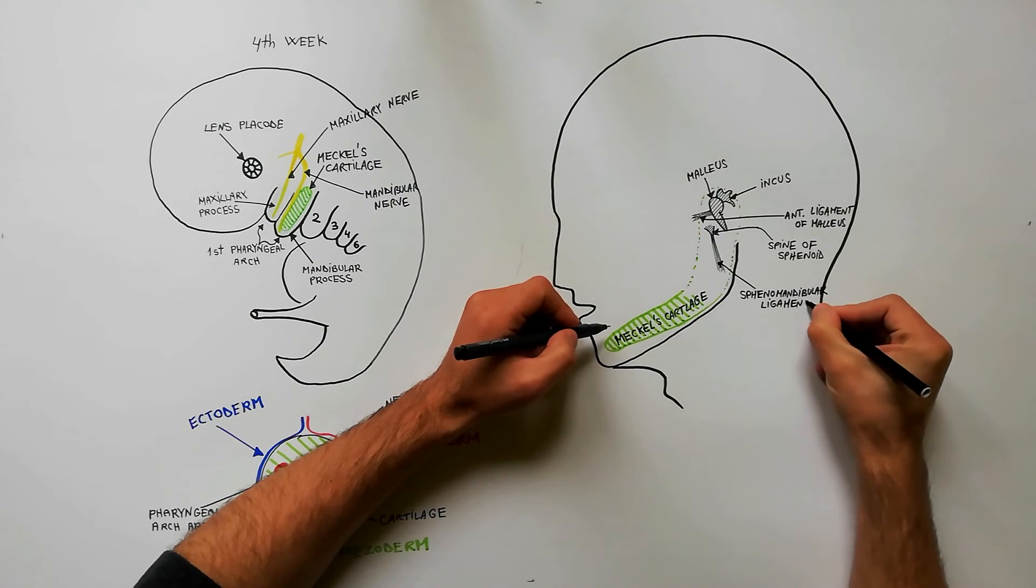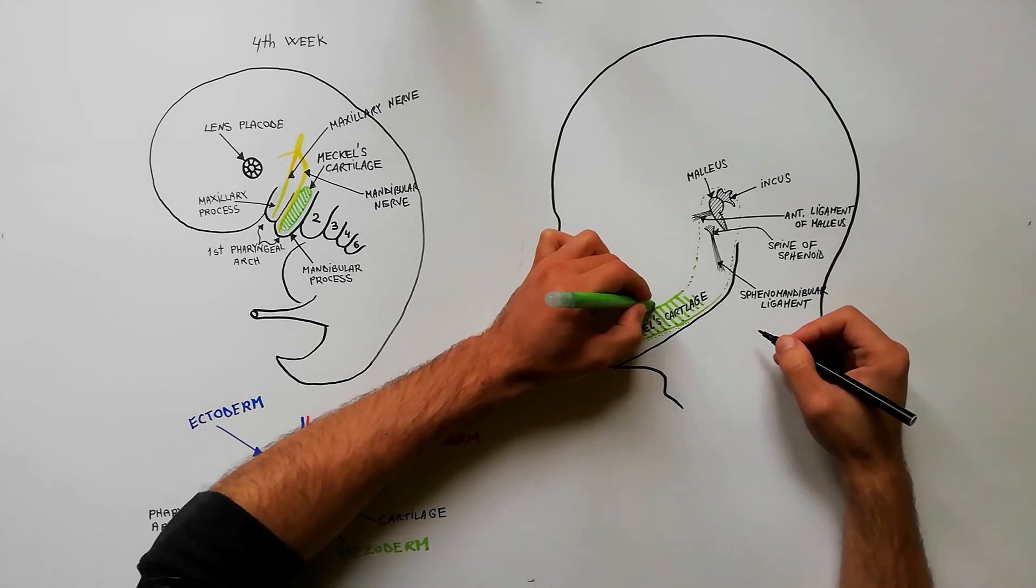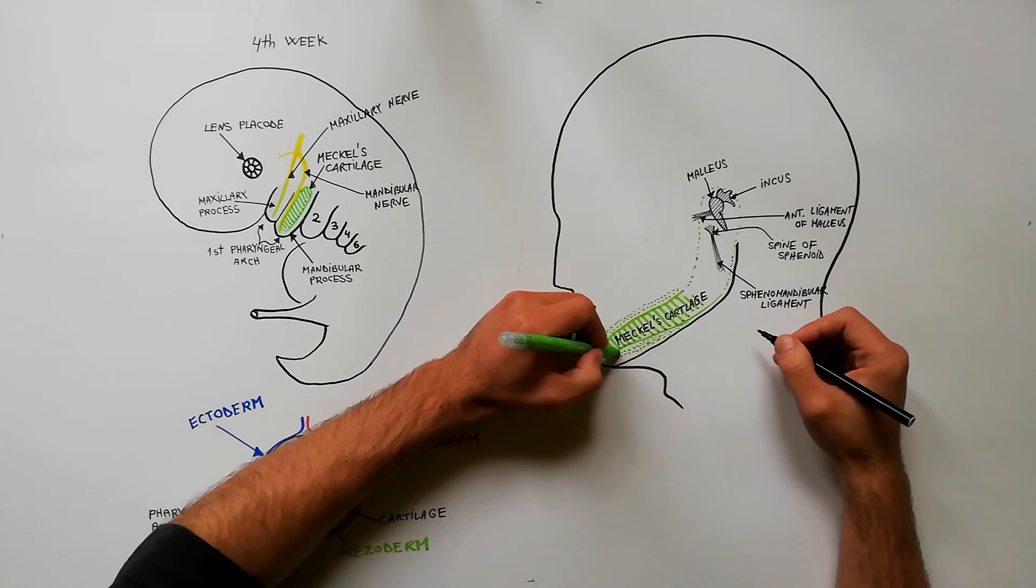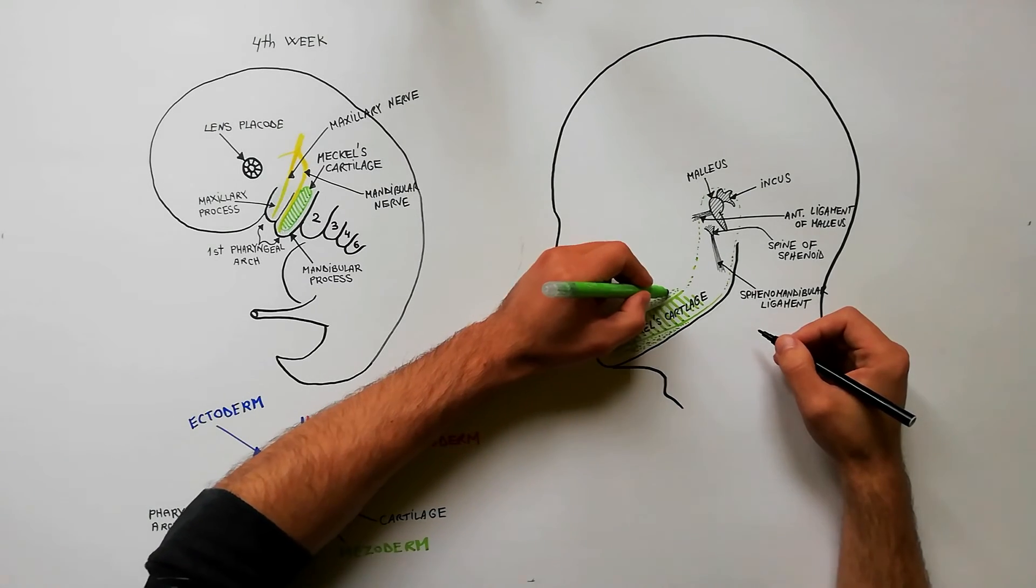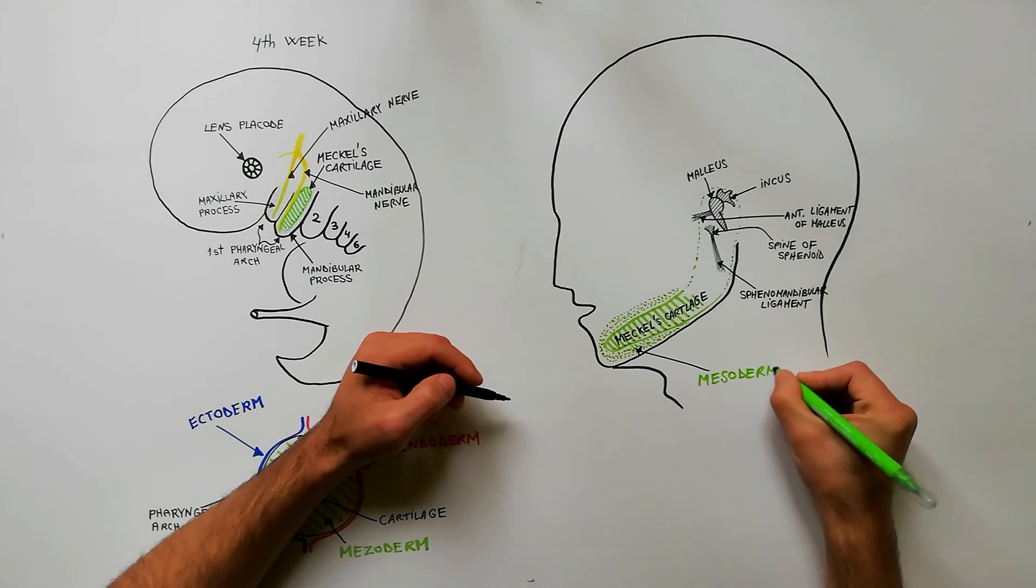Keep in mind that the mandible is not formed from Meckel's cartilage but is modeled around it by membranous ossification of surrounding mesoderm.